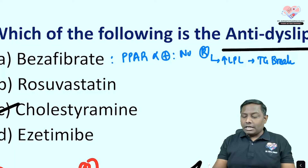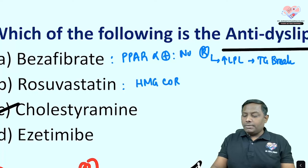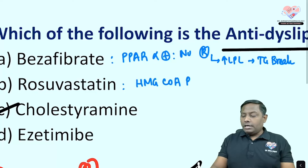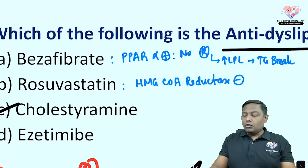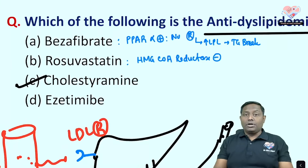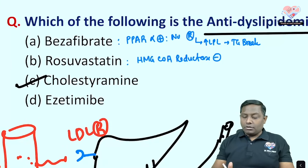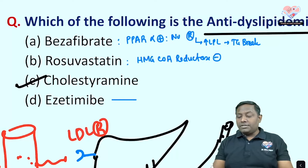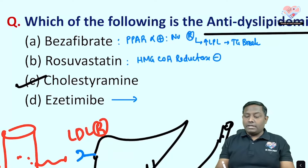Statins such as rosuvastatin and atorvastatin are HMG-CoA reductase inhibitors. They are the best drugs for increasing LDL cholesterol reduction and are among the most important antidyslipidemic agents.